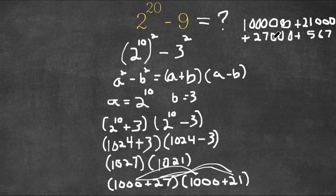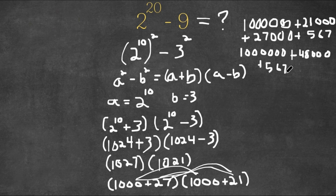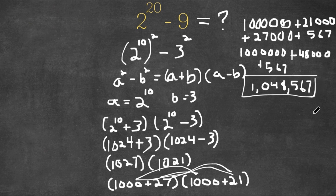So this equals 1,000,000 plus 21,000 plus 27,000 plus 567, which gives us 1,048,567. So this is our answer.